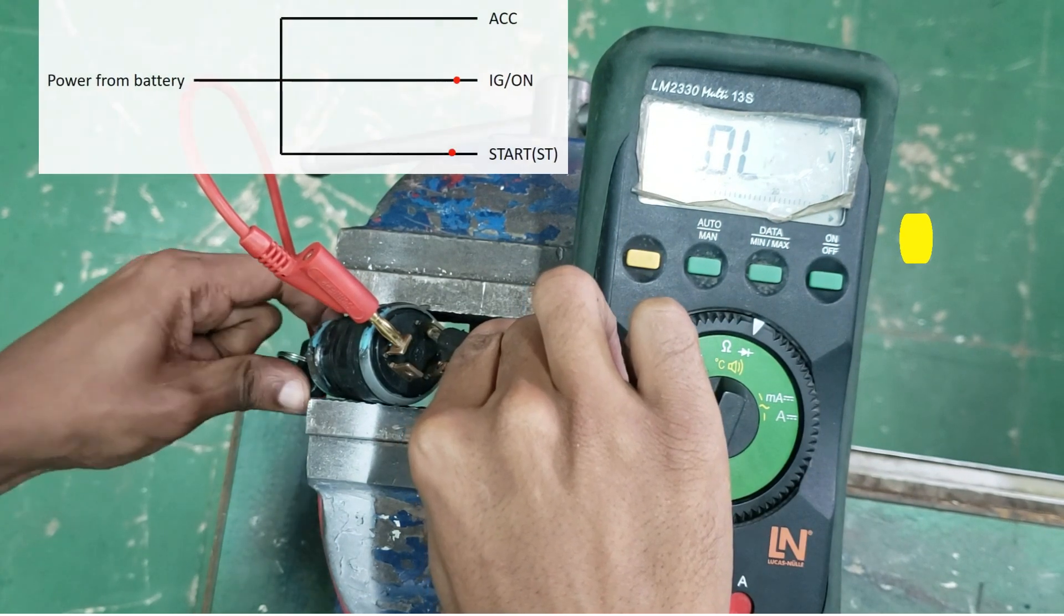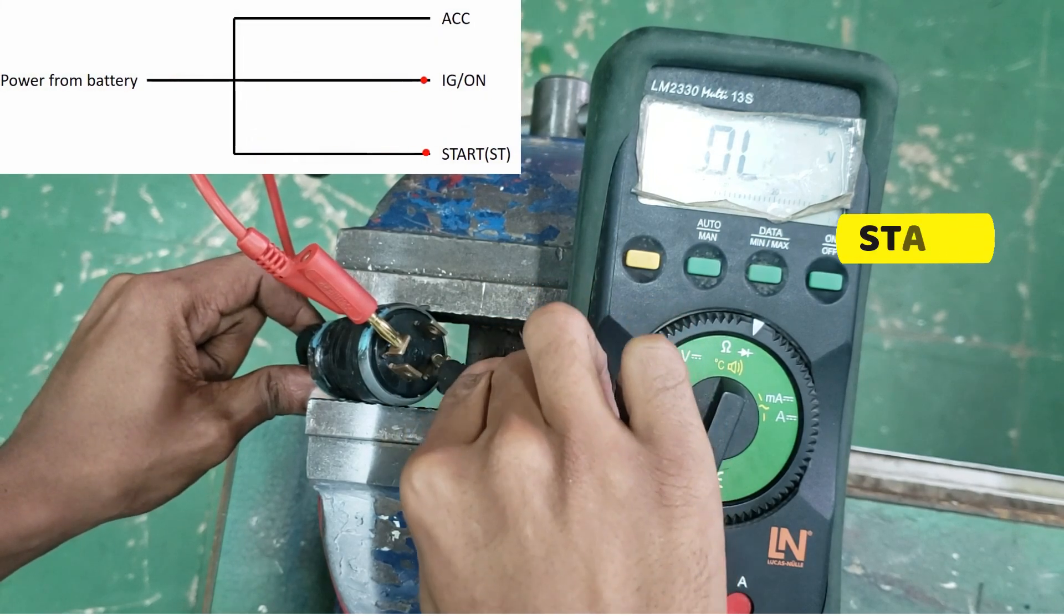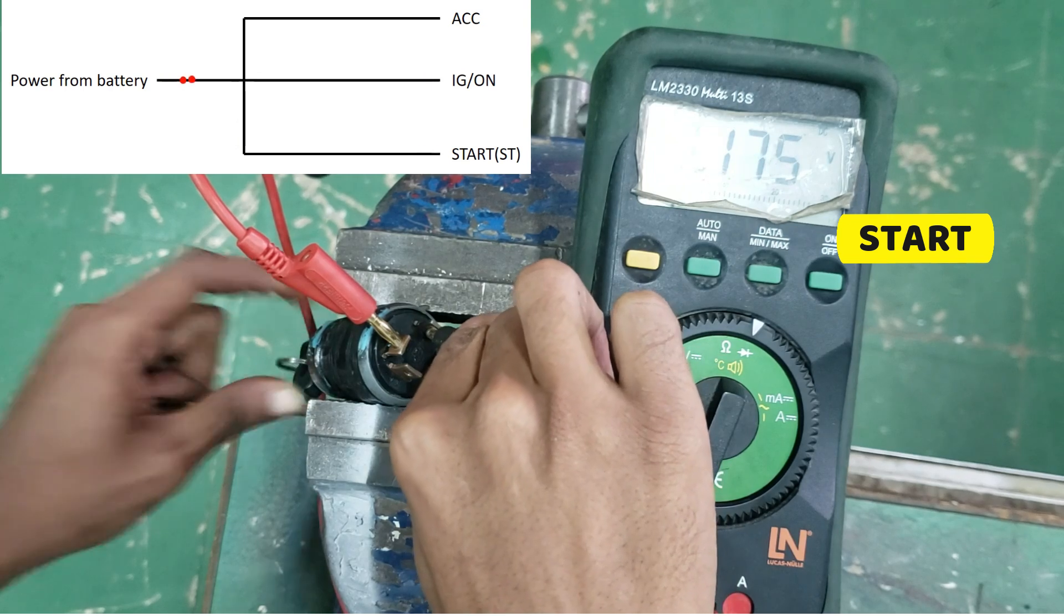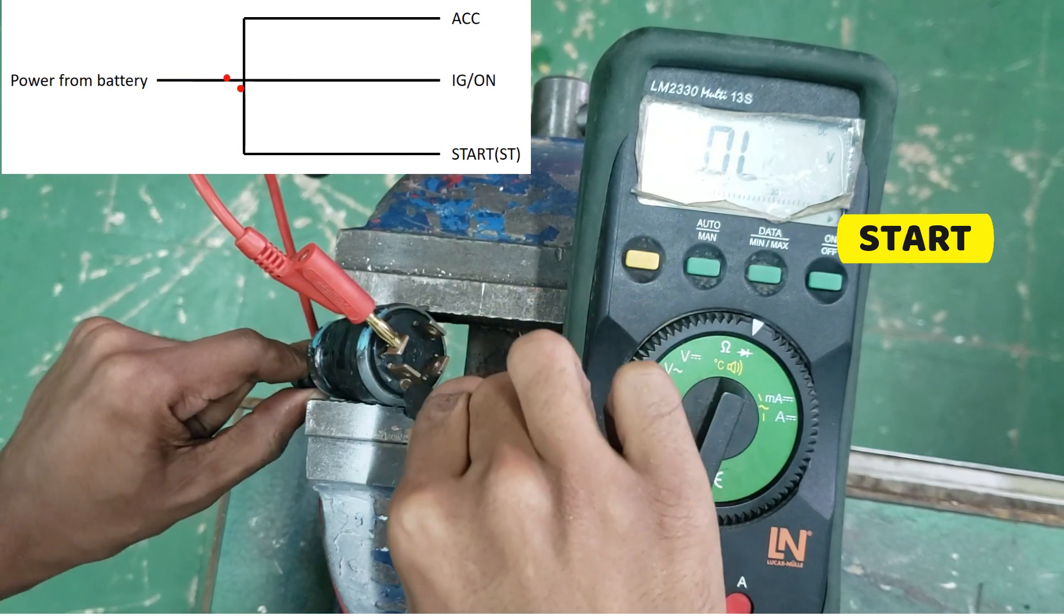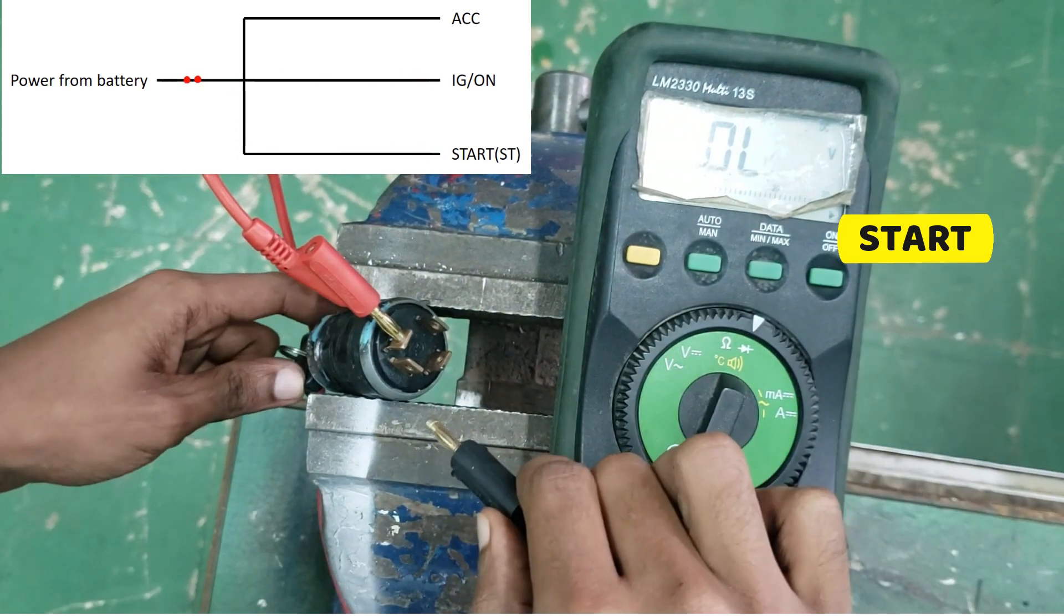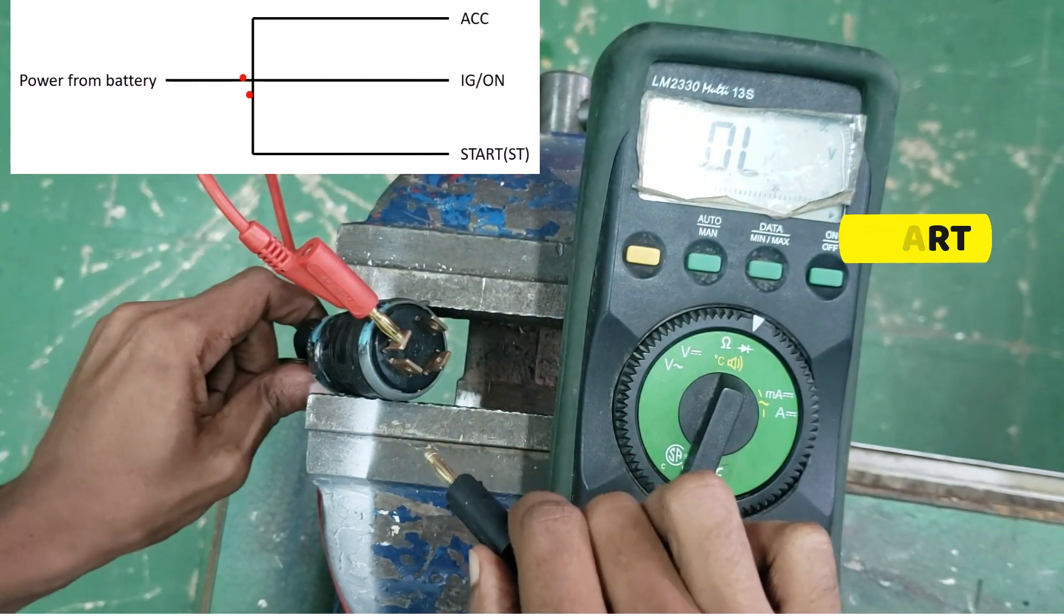The start position activates only the ignition and starter circuits, allowing the engine to be cranked and started. This position is used when starting the car but does not power any other electrical components besides those necessary for the engine to run.